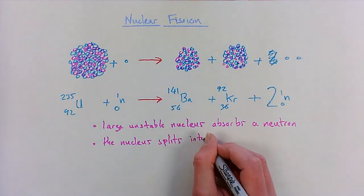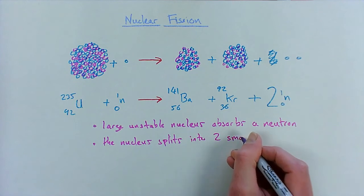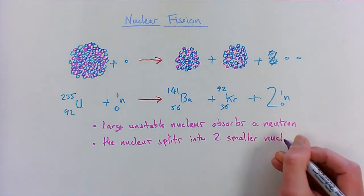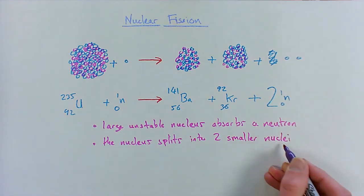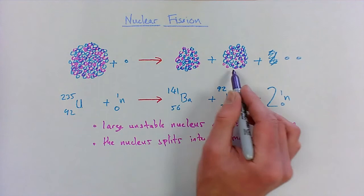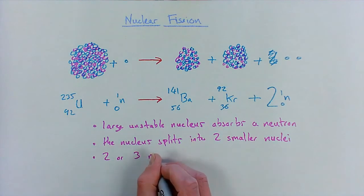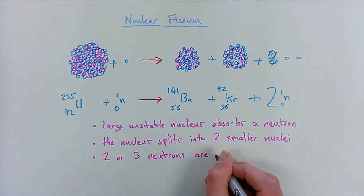Splits into two smaller nuclei. Nuclei is just the plural for nucleus, so here's our two smaller nuclei. And while this happens, we also get two or three neutrons emitted.